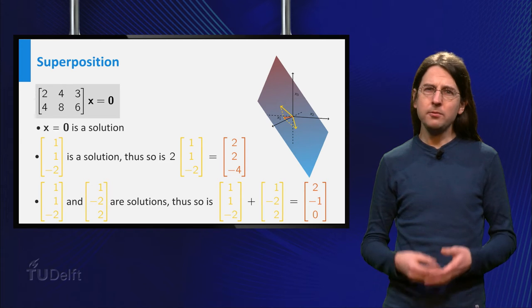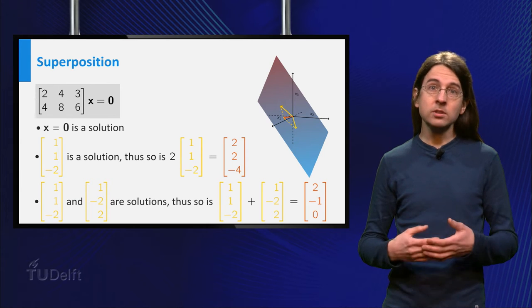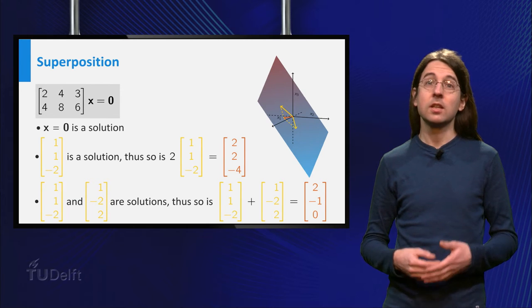Moreover, if you have two solutions, the two yellow vectors on the slide, then the orange sum of the two solutions is another solution.